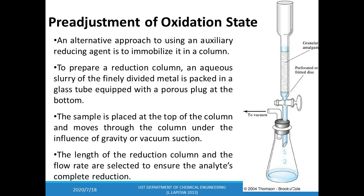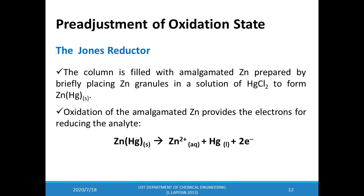An alternative method is to immobilize the auxiliary reducing agent in a reduction column. An aqueous slurry of finely divided metal is packed in a glass tube with a porous plug at the bottom. The sample is placed at the top and moves through under gravity or vacuum suction. There are two common reduction columns: in the Jones reductor, the column is filled with amalgamated zinc (zinc-mercury amalgam), prepared by briefly placing zinc granules in mercuric chloride solution. In the Walden reductor, the column is filled with granular silver metal, and the analyte solution is acidified with hydrochloric acid and passed through the column.